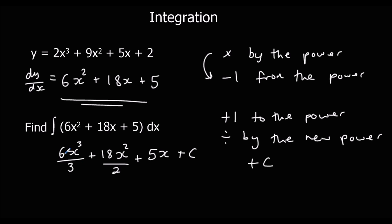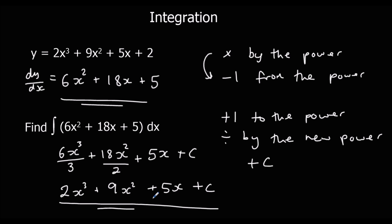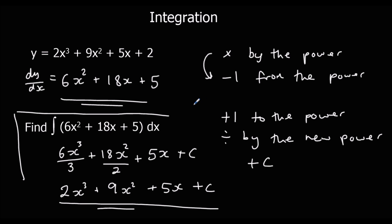Now we can simplify this: 6 over 3 is 2, and 18 over 2 is 9, giving us plus 5x plus c. So that is how we integrate. We've got no way of knowing what c was — well, we do know it was 2 here, but if this was just the question we'd have no way of knowing. So we just leave it as plus c, unless we're given information to find out what it is. So integration: add 1 to the power, divide by the new power, and plus c on the end.